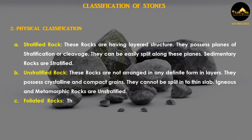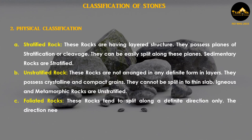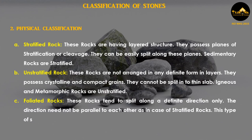Foliated rocks tend to split along a definite direction only. The direction need not be parallel to each other, as in the case of stratified rocks. This type of structure is very common in metamorphic rocks.